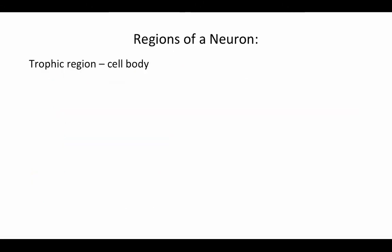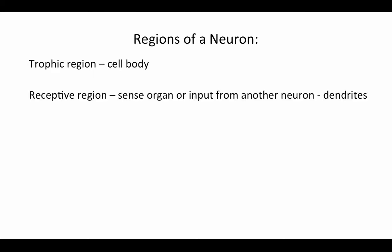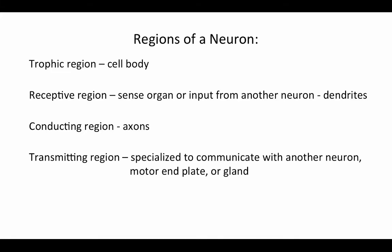Let's look at the composition and structure of a neuron. Remember, a cell in the nervous system is known as a neuron, while a nerve is a group of axons all traveling together to the same region of the body — neuron and nerve are not equivalent terms. A neuron has a trophic region, or cell body, where all the metabolism occurs. There's a receptive region — either a sense organ or dendrites taking input from another neuron — a conducting region consisting of long axons, and a transmitting region at the axon terminals specialized to communicate with another neuron, a motor end plate, or a gland.